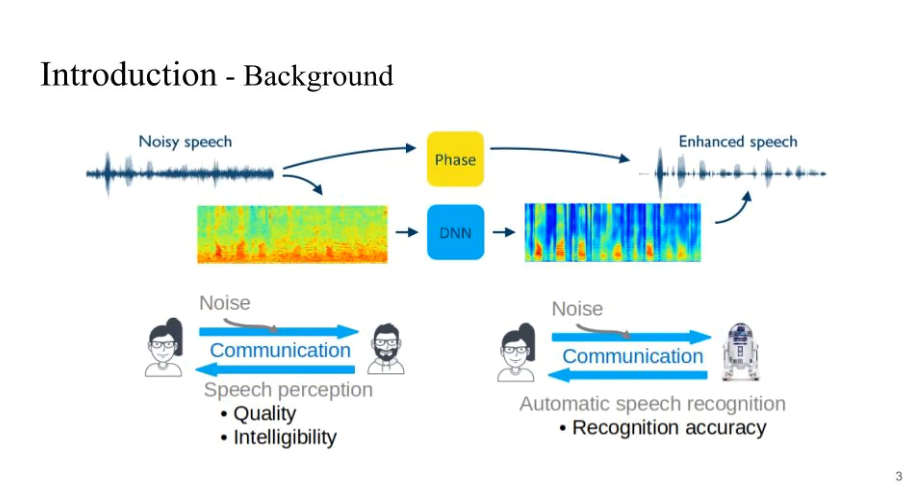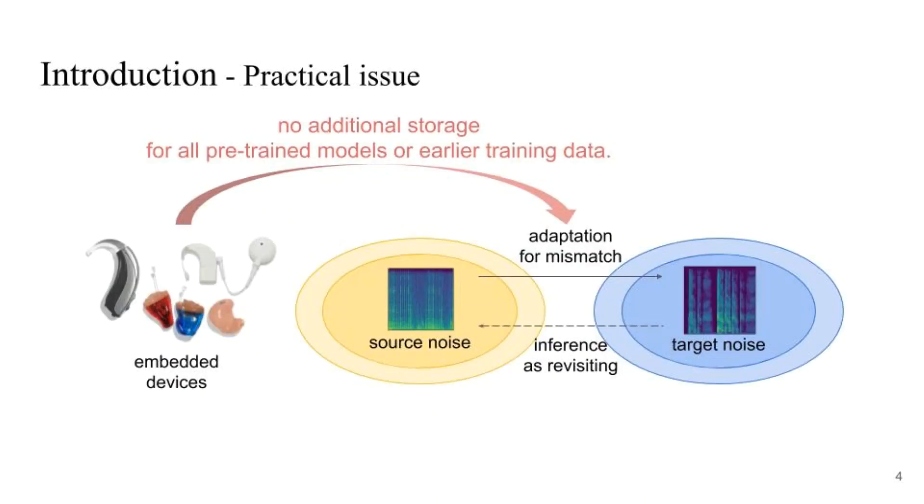The objective of speech enhancement is to transform low-quality speech signals into enhanced-quality speech signals. In many speech-related applications such as automatic speech recognition and speech emotion recognition, SE is used as a preprocessor to remove noise components from speech signals. In many portable or assistive hearing devices such as mobile phones, hearing aids, and cochlear implants, SE is crucial for increasing speech intelligibility and clarity in noisy environments.